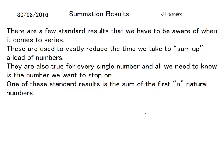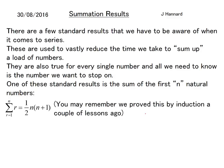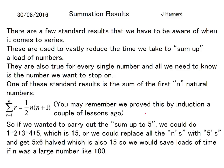One of these standard results is the sum of the first n natural numbers. You might remember from a couple of lessons ago when we started induction that we proved that the sum from 1 to n equals a half of n times n plus 1. So if we wanted to carry out the sum up to 5, we could do 1+2+3+4+5, which is 15, or we could replace all n's with 5's and get 5×6 halved, which is also 15. It would save loads of time if n was a large number like 100.